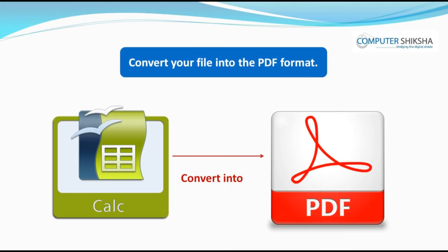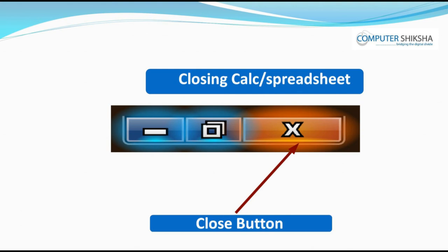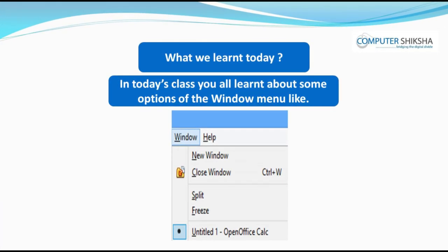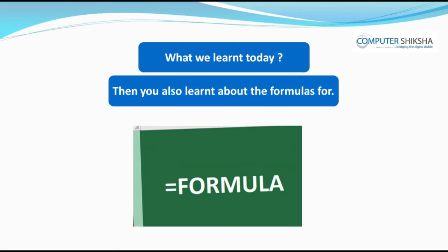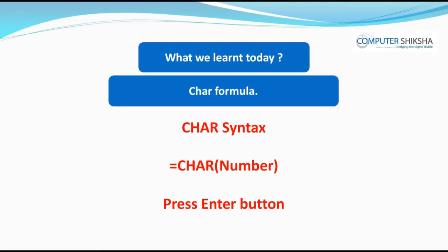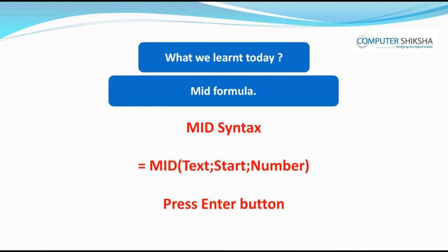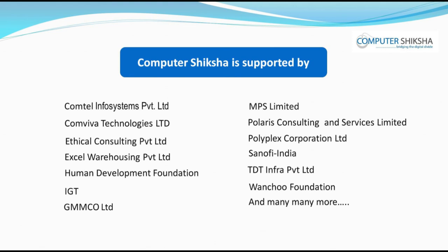Convert your file into PDF format and then save your file. Today's class ends here — close your file and properly shut down your computer. In today's class you all learned about some options of the window menu like new window, close, freeze, and split. Then you learned about formulas for character, concatenate, exact, find, left, mid, lower, upper, and trim. Computer Shiksha is supported. Thank you.